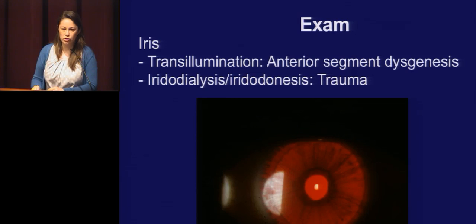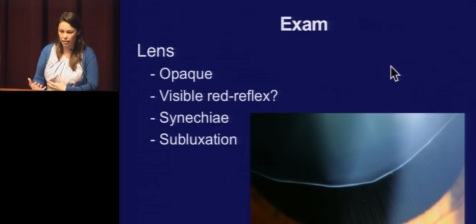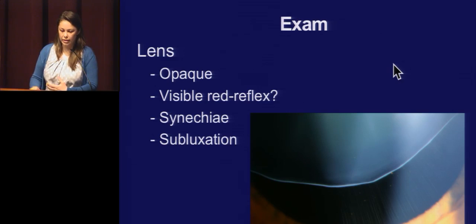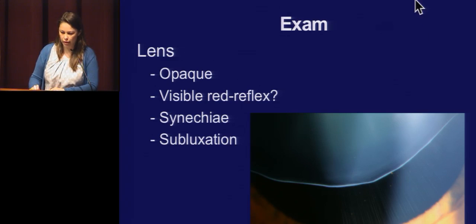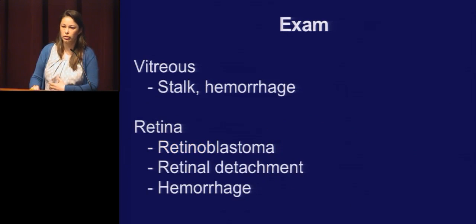Look for transillumination signs of aniridia, anterior segment dysgenesis, or trauma. You're going to actually look at the lens — the opacity, where in the lens the issue is. We have a handheld slit lamp in our office. Look for any subluxation, look for a stalk, vitreous hemorrhage — basically anything that could make this a not straightforward pediatric cataract.